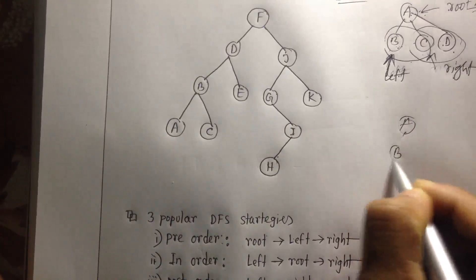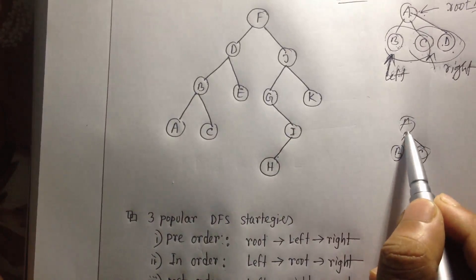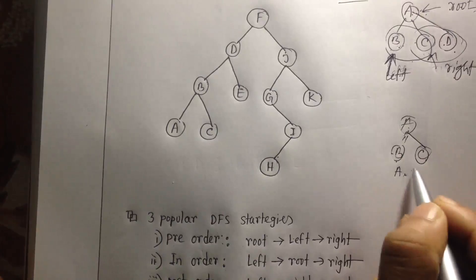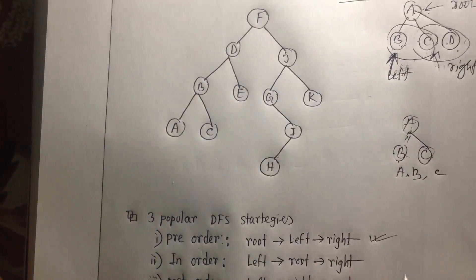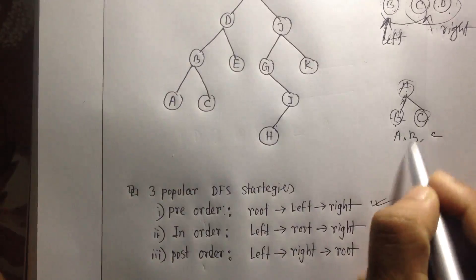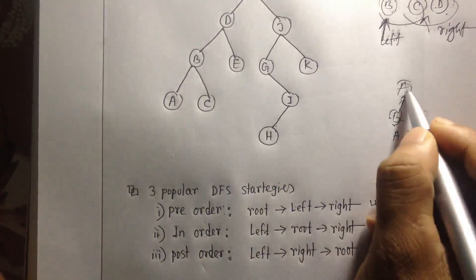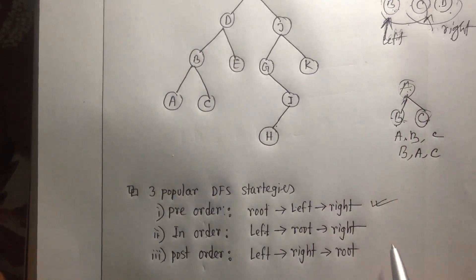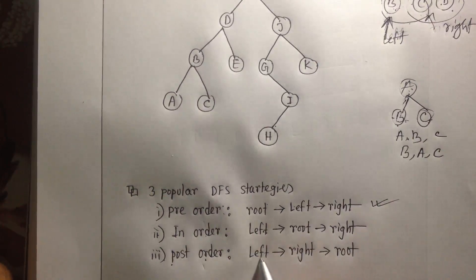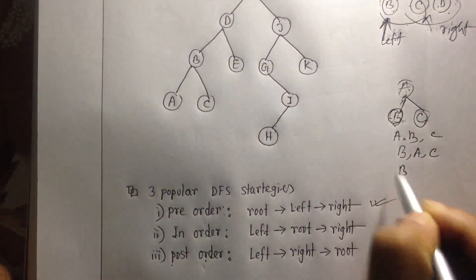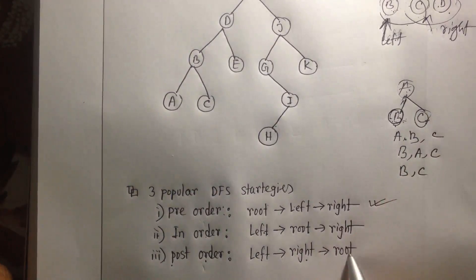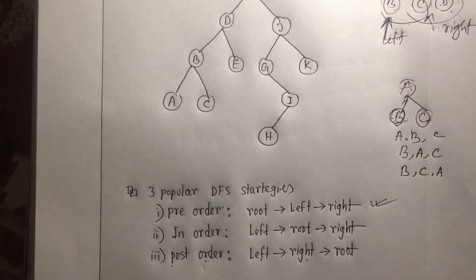For example, with pre-order you start with root node A, then go left, then go right. For in-order, you start with the left node B, then go to the root node A, then go to the right node C. For post-order, you start with the left node B, then the right node C, and then visit the root node A. These are the three strategies you can follow while solving tree traversal problems with DFS.